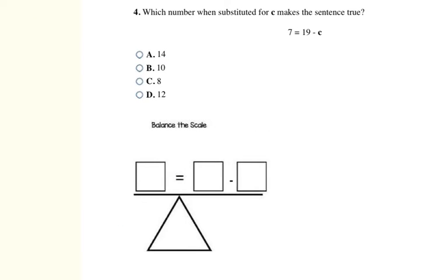Here's another one with subtraction. I have 7 on the left side of the equation and 19 minus C, whatever that mystery number is. So I'm looking, what number can I take away from 19 that will leave me with 7? And so you could draw the symbols like I showed you in the last problem and group out 7 to be left and count up how many you'd have to take away.